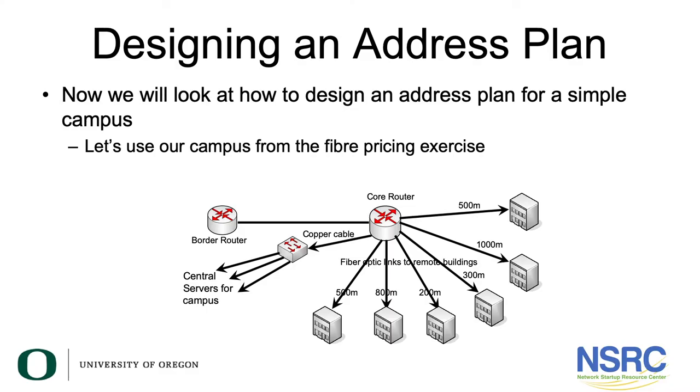Now we will look at how to design an address plan for a simple campus. We will be using our campus from the fiber pricing exercise. As you can see on the screen, we have six buildings with a server LAN and a core and border router.